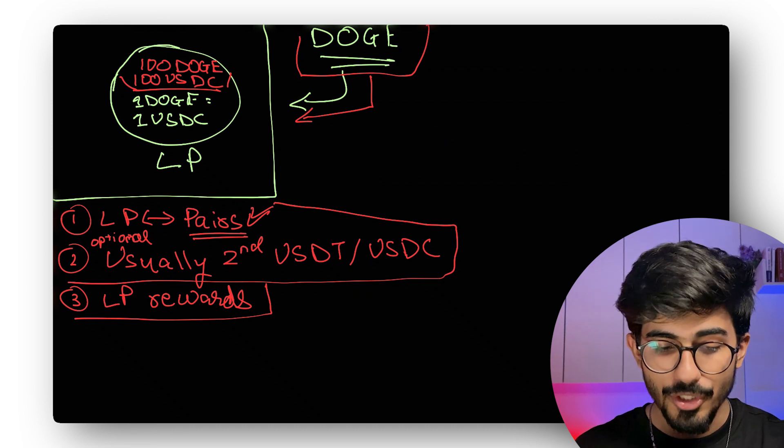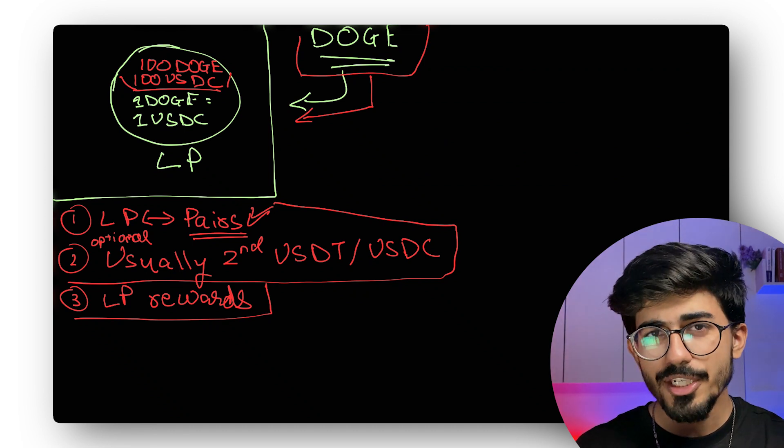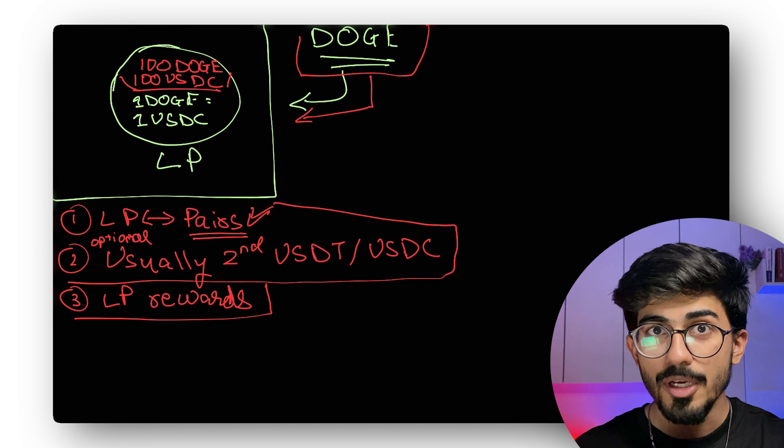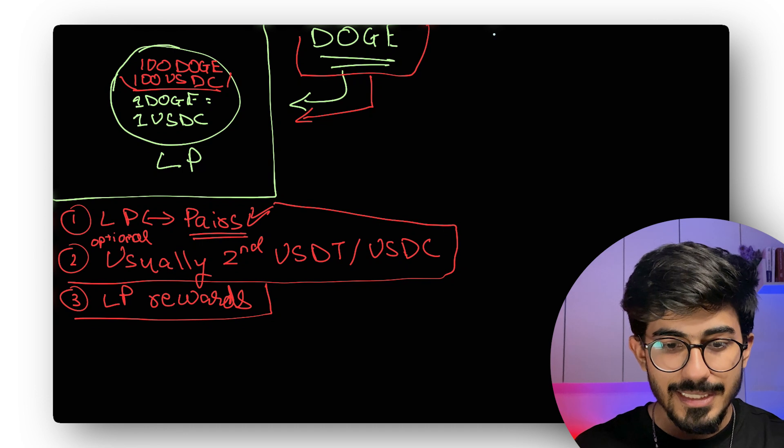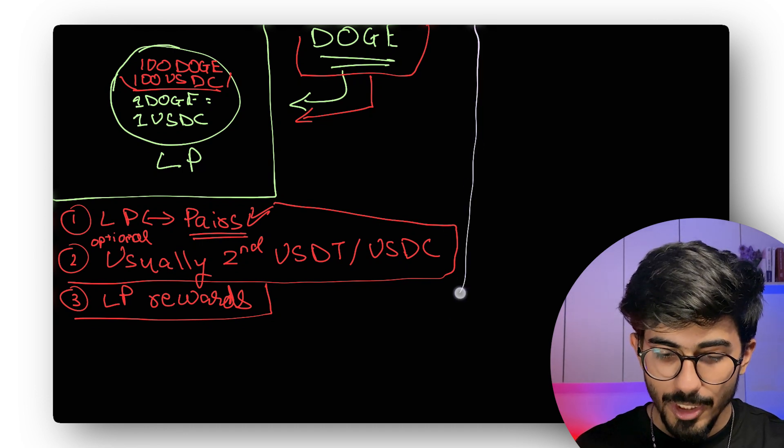Let's understand some other things now. So now that you've created your own liquidity pool, people will start buying your cryptocurrencies. They'll be selling it. So how does all of this buying and selling actually affect your cryptocurrency's price?